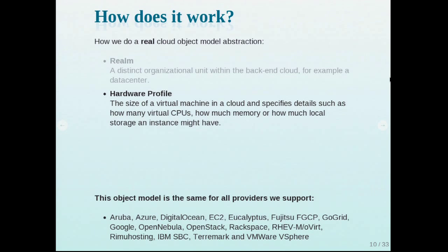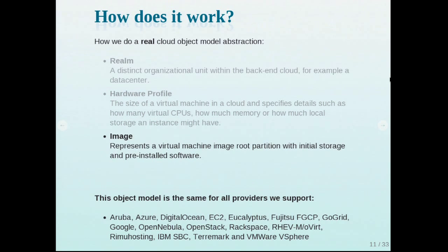Then we have hardware profiles, which define the sizing of virtual machines — how many virtual CPUs, how much memory, how much storage. We are very flexible in hardware profiles to map them to all supported cloud providers. For EC2, we map them statically to instance types; for OpenStack, oVirt, or RHEV, you can choose memory from a range. Then you have the image, which is a template representing the root partition for your virtual machine, with the operating system and applications installed, bundled as an image — called a template in RHEV, an image in Amazon and OpenStack.